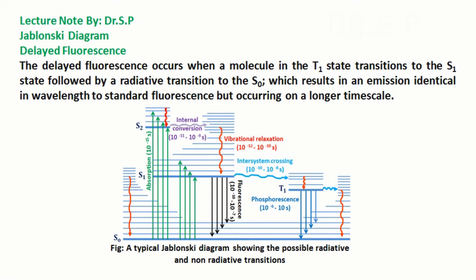Delayed fluorescence occurs when a molecule in the T1 state transitions to the S1 state, followed by a radiative transition to S0. This results in an emission identical in wavelength to standard fluorescence but occurring on a longer timescale.